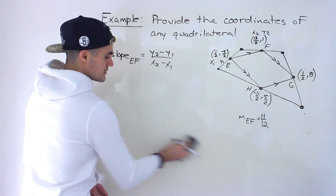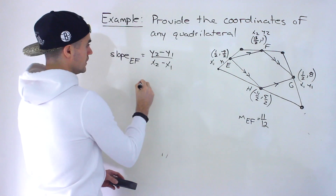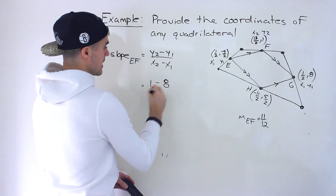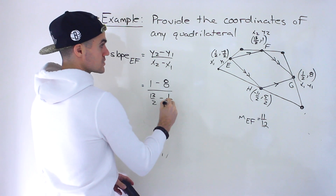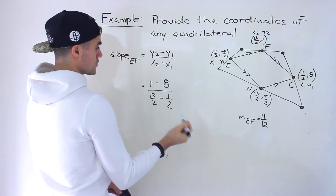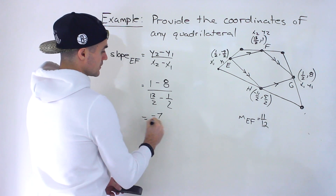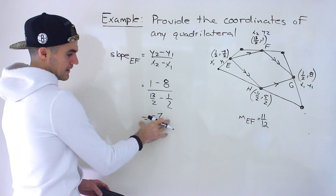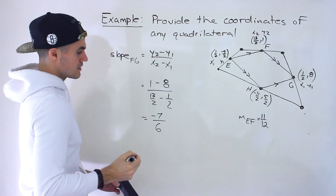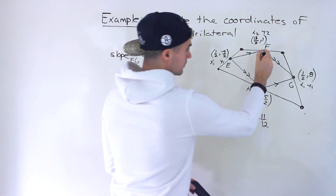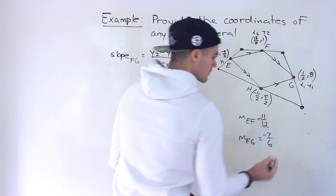Now let's find the slope of FG. With F as X2, Y2 = (13/2, 1) and G as X1, Y1 = (1/2, 8): the numerator is 1 minus 8, which gives us negative 7. The denominator is 13/2 minus 1/2, which we already know is 6. So the slope of FG is negative 7 over 6.